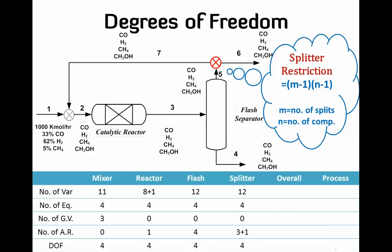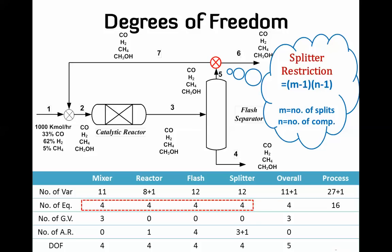No single unit has zero degrees of freedom. For the overall loop: 11 + 1 variables, four equations, three given variables, no additional relations — degrees of freedom is five. Even the overall balance doesn't help directly. For the full process: 27 + 1 variables (including the rate of reaction), 16 equations summed across all units, three given variables, and nine additional relations (one conversion, four splitter, four flash separator), giving degrees of freedom of zero. The process can be solved with the information we have.